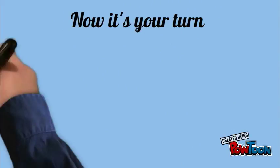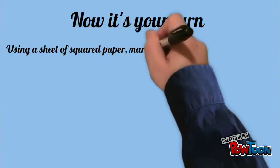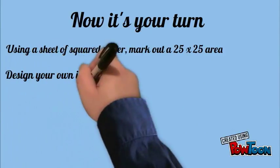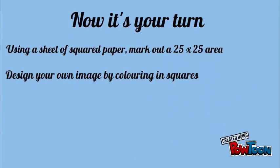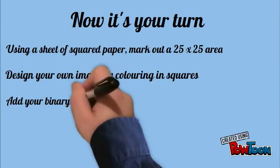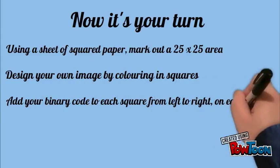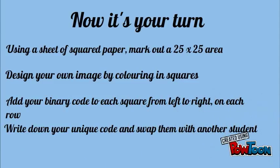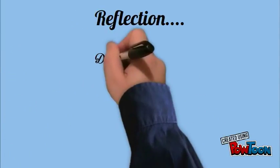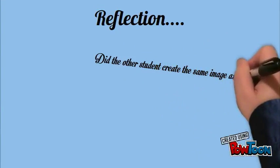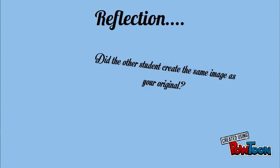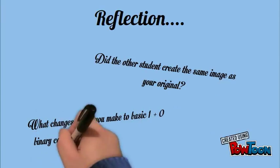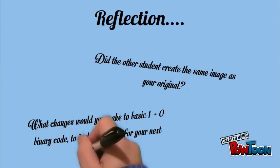Now it's your turn. Using a sheet of squared paper, mark out a 25 by 25 area. Design your own image by colouring in the squares. Add your binary code to each square from left to right on each row. Write down your unique code and swap it with another student. Did the other student create the same image as your original? What changes would you make to basic 1 and 0 binary code to include colours for your next image?